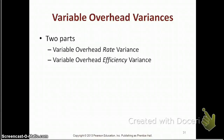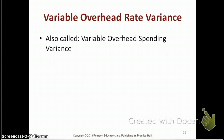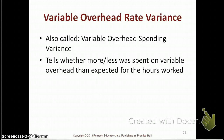The variable overhead variances are also split into two parts: the variable overhead rate variance and the variable overhead efficiency variance. Note that these names — rate and efficiency — are the same words we use for our direct labor variances. The variable overhead rate variance is sometimes called the variable overhead spending variance, and it tells us whether more or less was spent on variable overhead than what we expected for the hours worked.